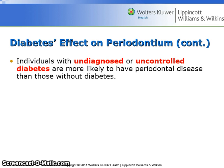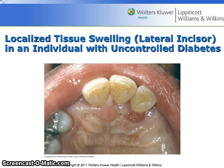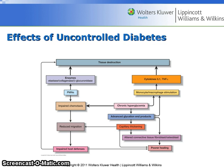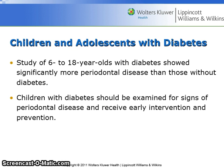Individuals with undiagnosed or uncontrolled diabetes are more likely to have periodontal disease than those without diabetes. Notice the localized tissue swelling around the lateral incisor in an individual with uncontrolled diabetes, as seen in figure 10.1 on page 175 of your textbook. A study of 6 to 18 year olds with diabetes showed significantly more periodontal disease, and children with diabetes should receive early intervention and prevention.